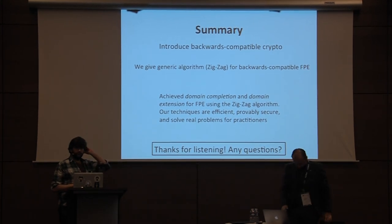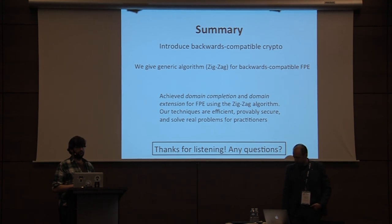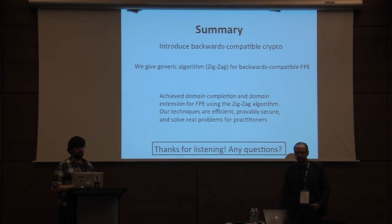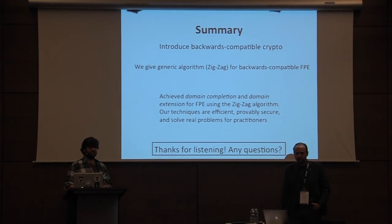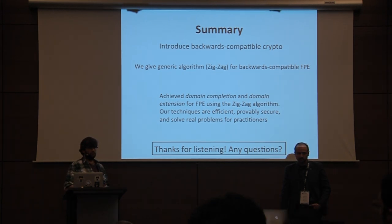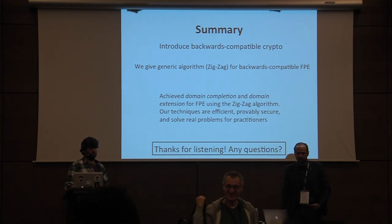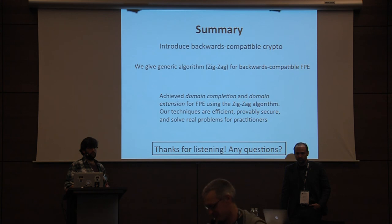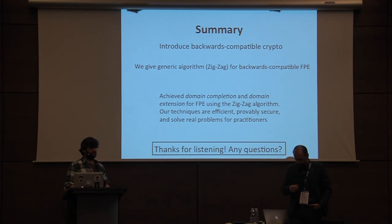Question: You say the construction is efficient, but with non-zero probability the while loop never terminates, so the average complexity is infinite. Can you have a construction with good average complexity? It does terminate unless the old tokenization scheme has a fixed point — if you decrypt you continue to obtain that fixed point and the while loop never terminates. Response: I have to think about it, maybe we can take it offline — it's possible, it's possible.